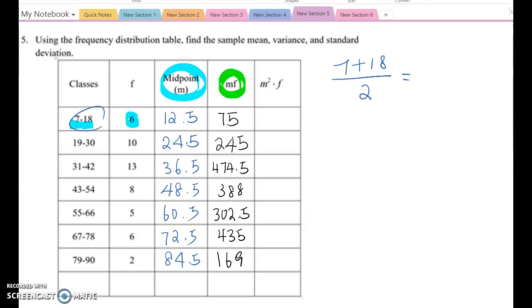After calculating all this value, you will get those values and the total sum become 2089. And the total frequency will be 50. Therefore, the mean X bar equals 2089 divided by 50. Then you will get 41.78 here.